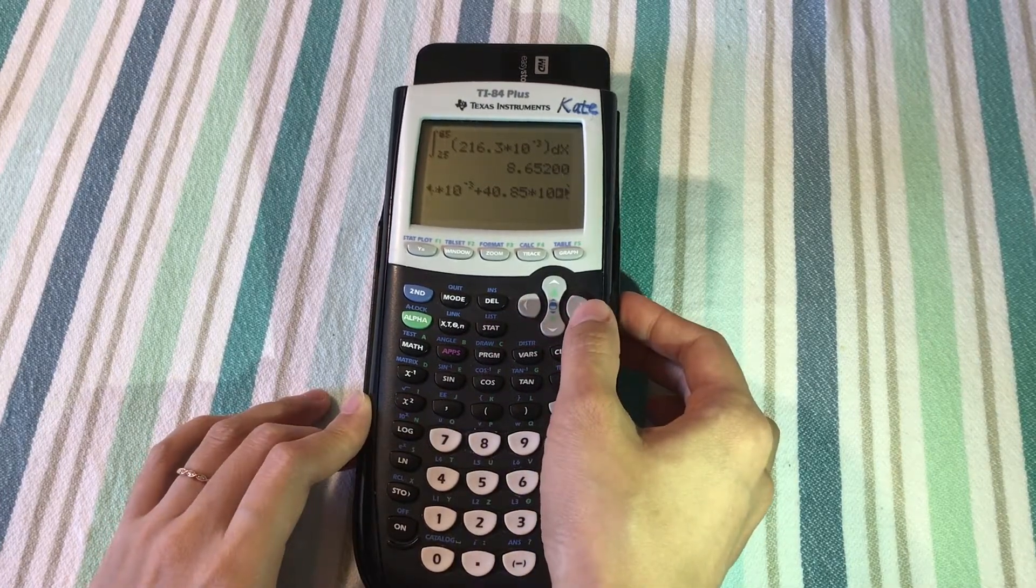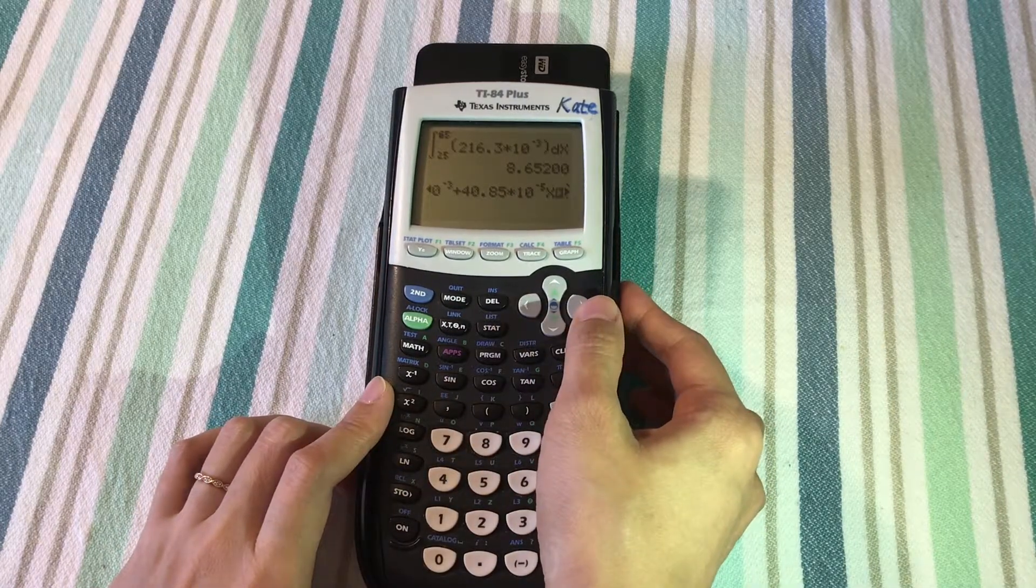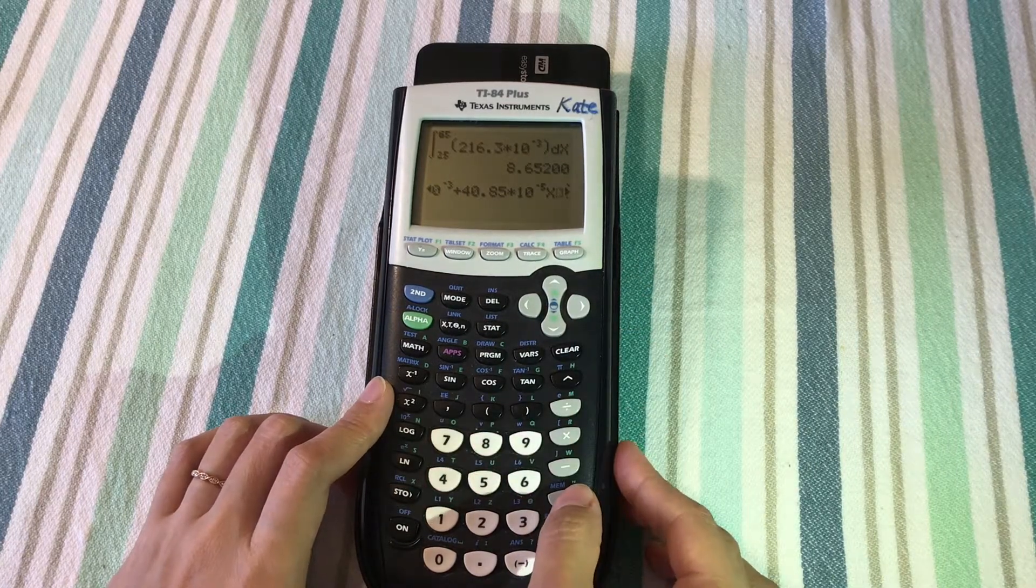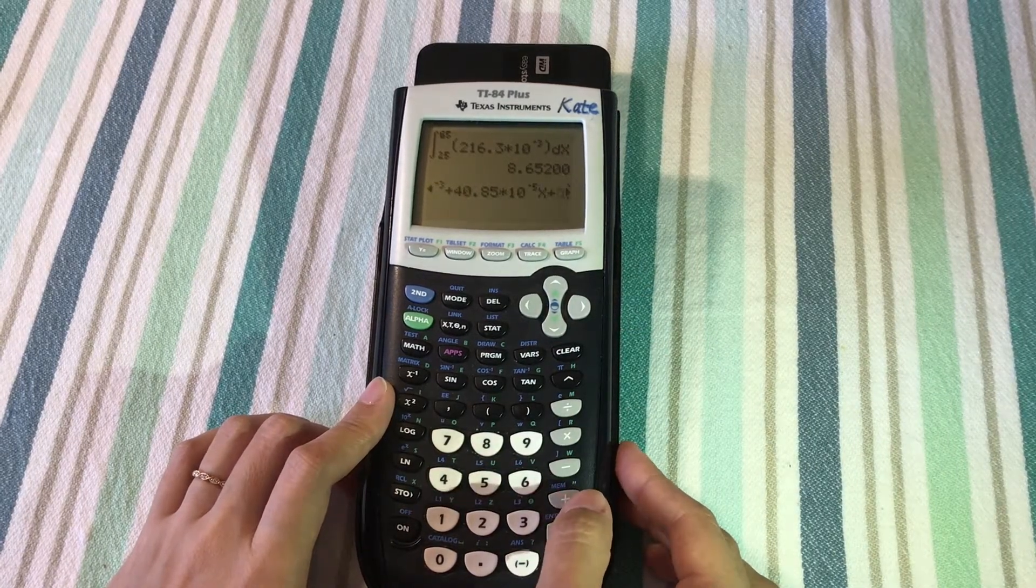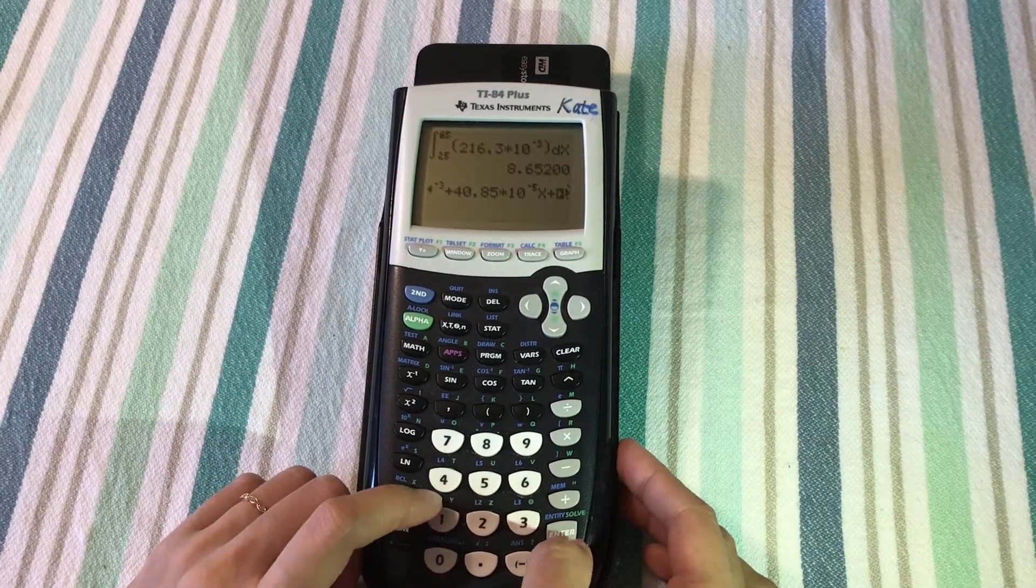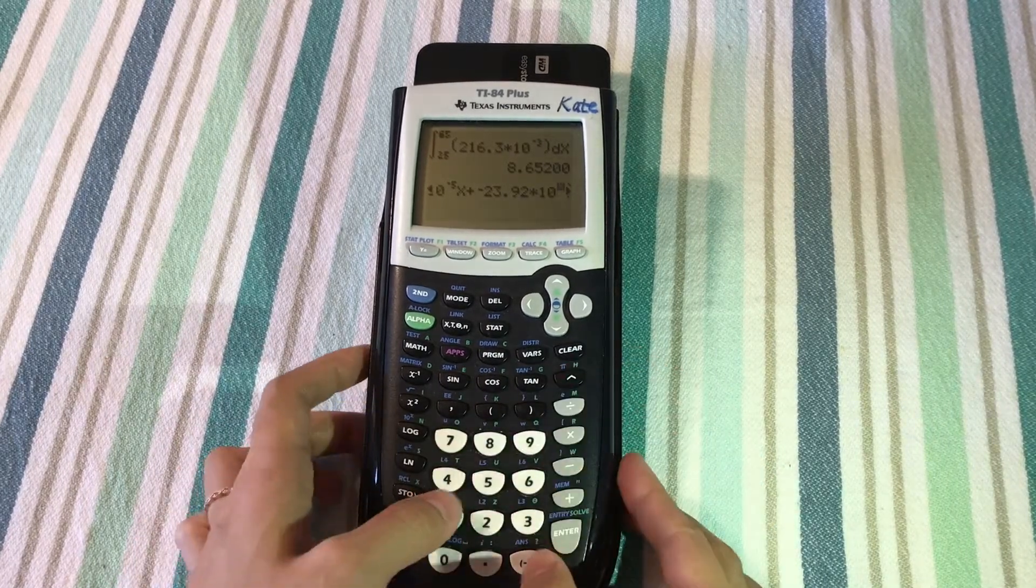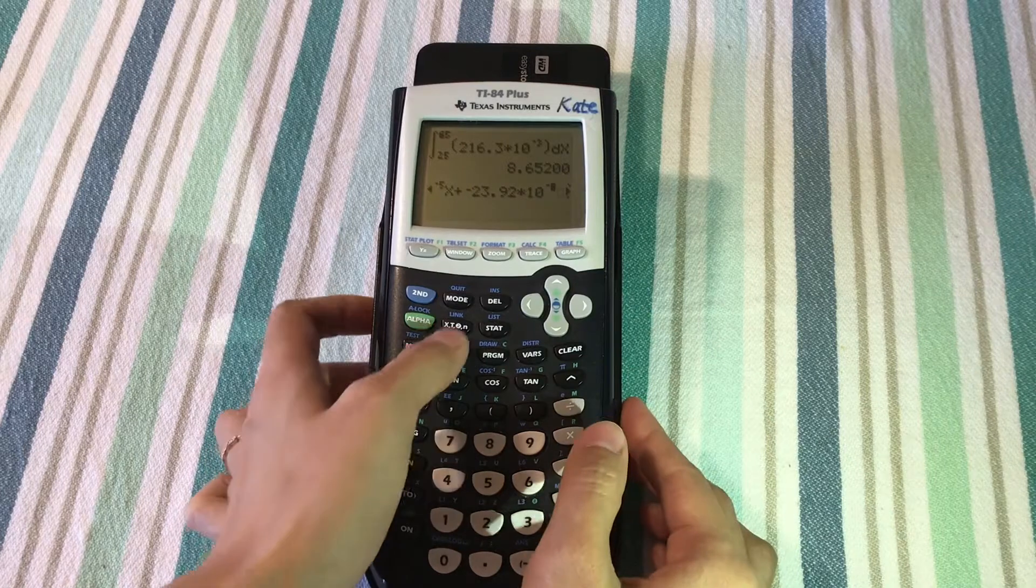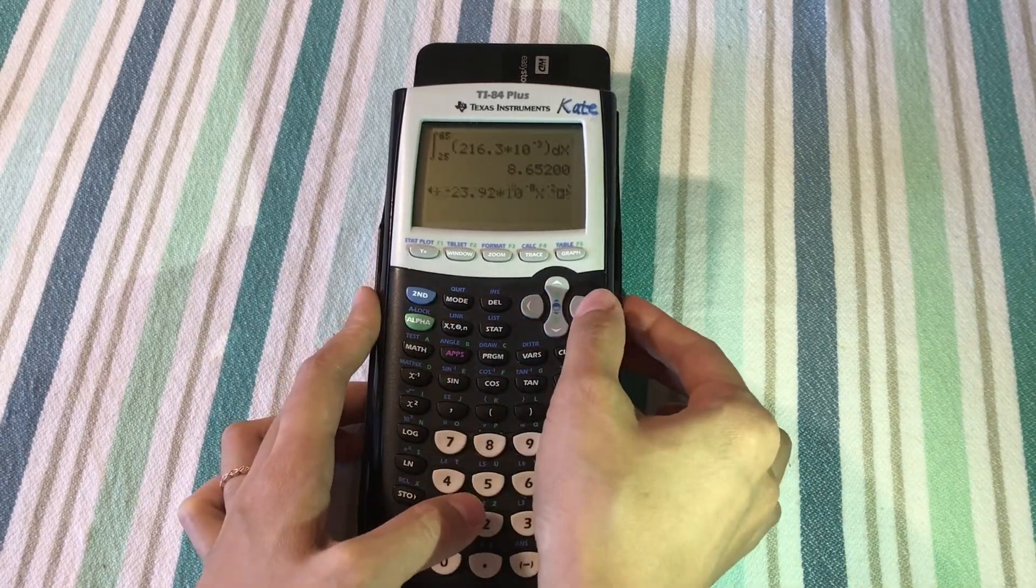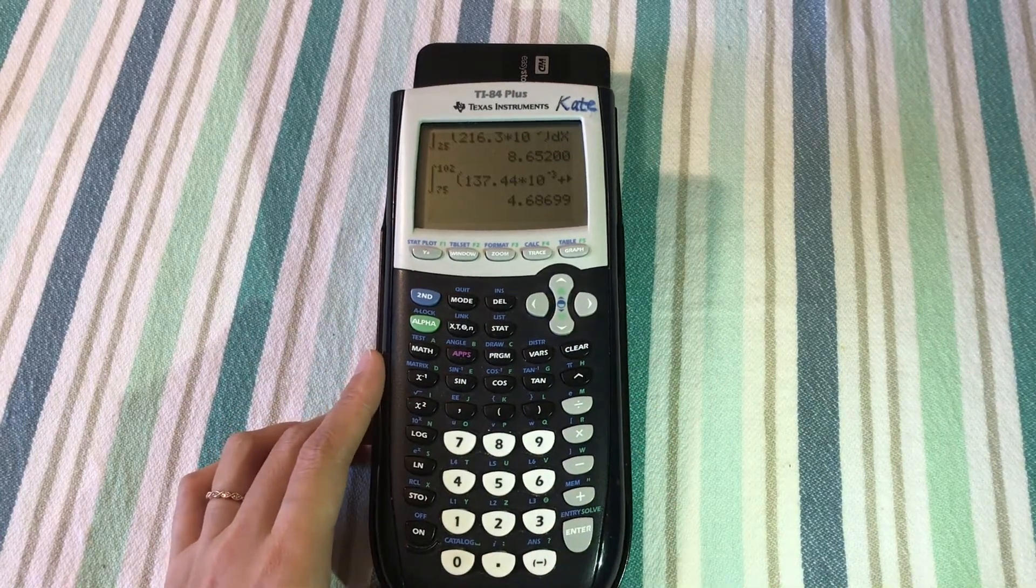Plus cT^-2. My c is -23.92 × 10^-8, and T^-2. Again, my x is T in the book, to the negative 2, and dx.